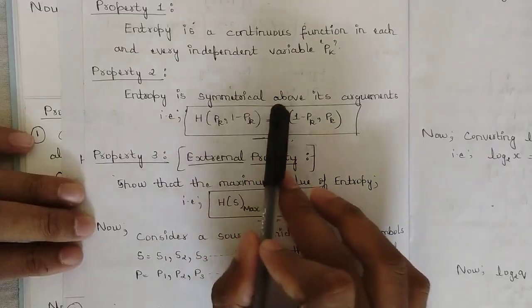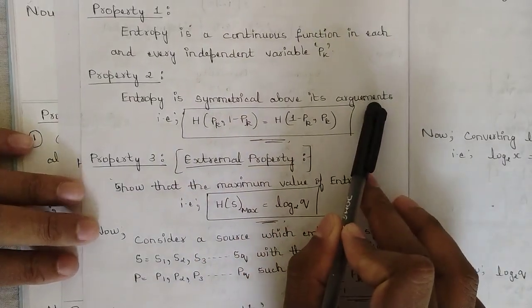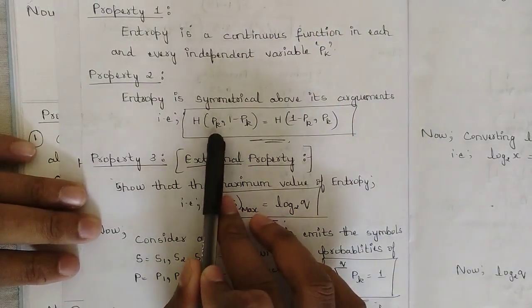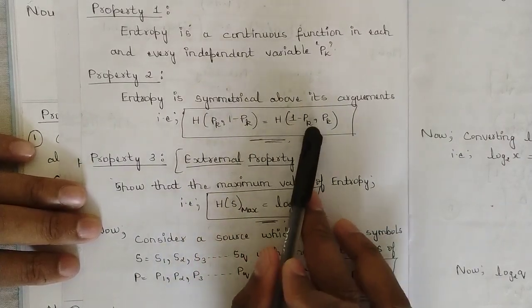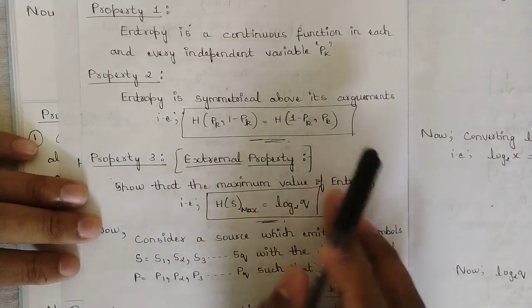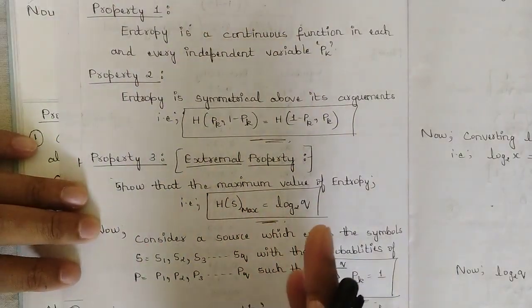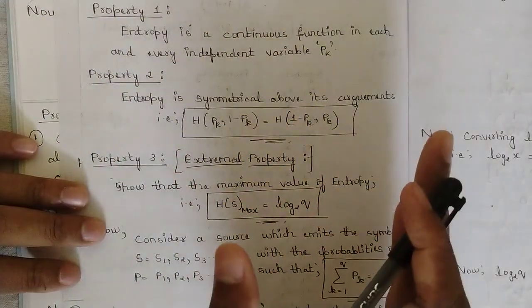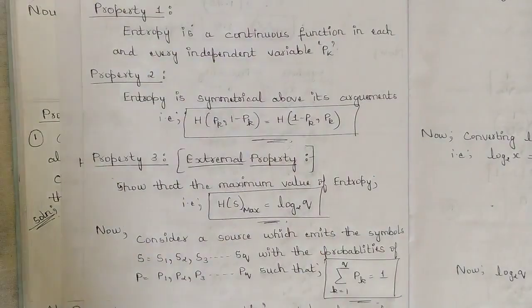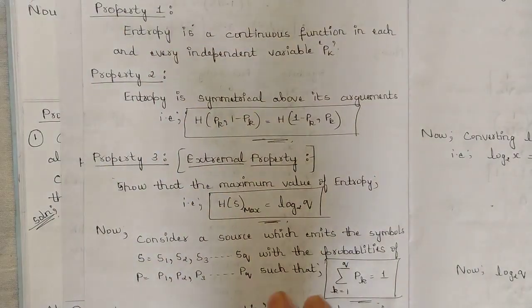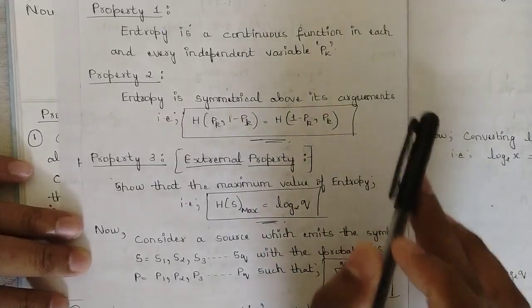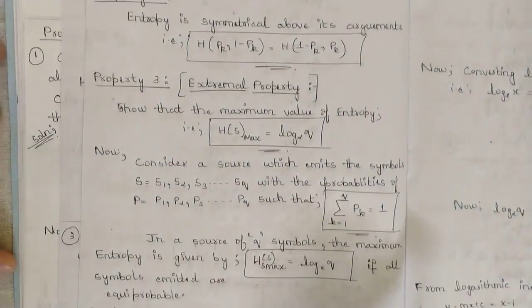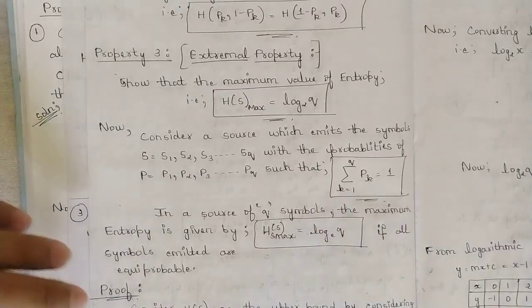Property two: entropy is symmetrical about its arguments. That is, H of P(K), 1 minus P(K) is equal to H of 1 minus P(K), P(K). If you extend the entropies for different sets of probabilities, it is symmetrical for both sets. That's why entropy is symmetrical about its arguments.